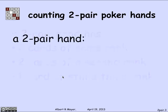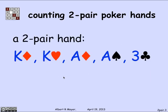Here's a typical two pair hand: two kings, both of rank 13 — one is the king of diamonds, the other is the king of hearts. There are four suits: diamonds, hearts, spades, clubs. There are also two aces — a pair of aces — one is the ace of diamonds, the other is the ace of spades. And finally, hanging loose, there's a third rank that doesn't match the kings or the aces: namely, the three of clubs.